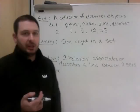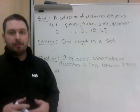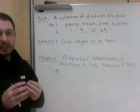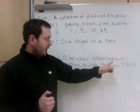An element is any one object in a set. A set is made up of a bunch of elements. In the case above, there were four elements: a penny is an element, the nickel is an element, the dime is an element, and the quarter is an element.